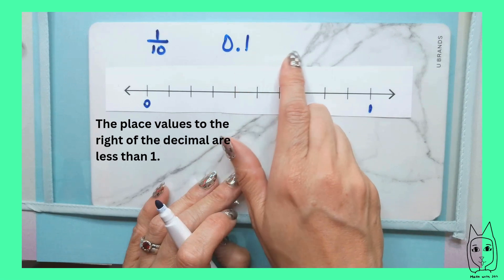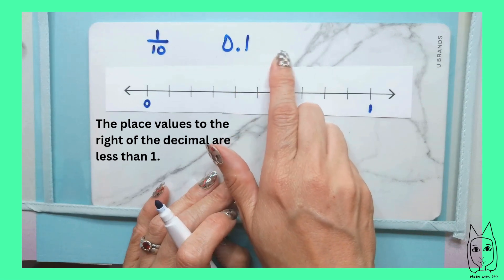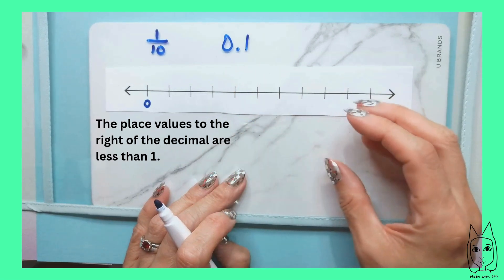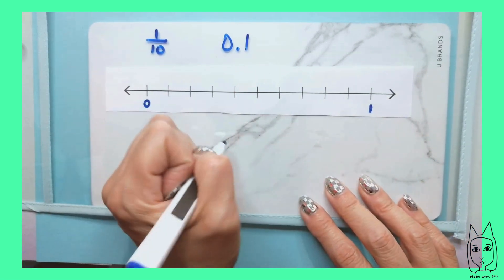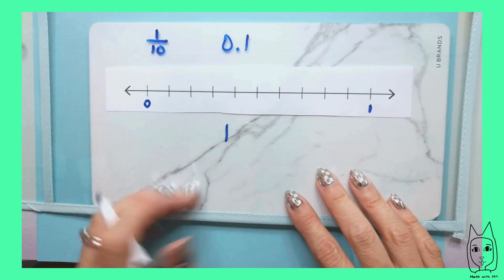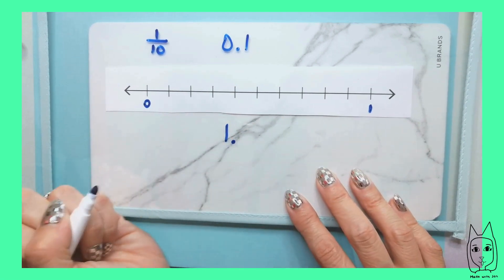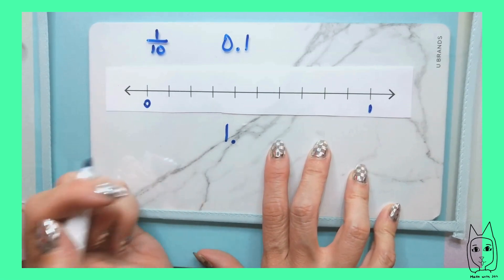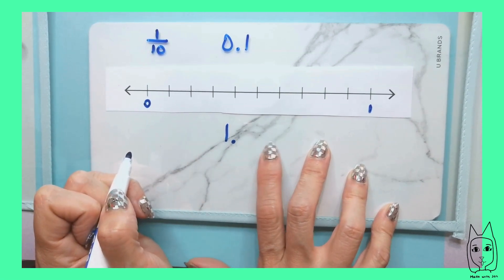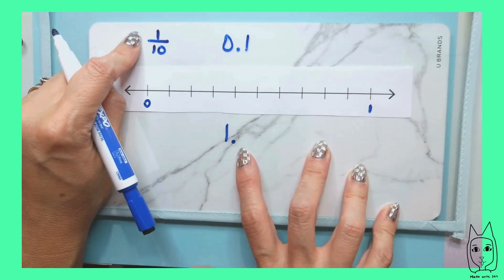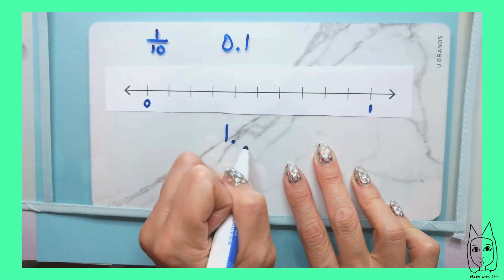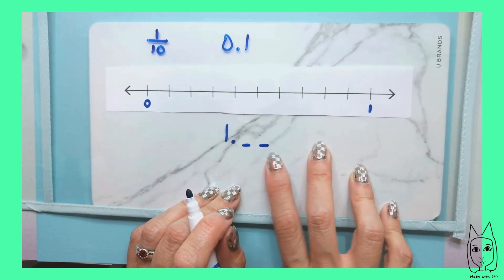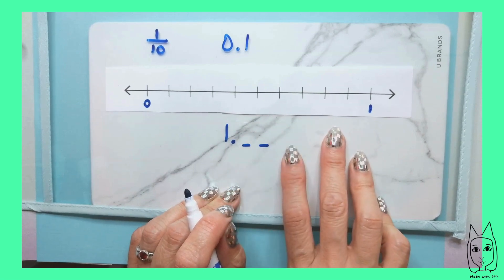In grade four, you're going to start looking at the place values to the right. The place values to the right are values that are less than one. If I had the number one, there is a decimal behind it that we just usually don't write unless there's a part of a whole we want to talk about. We are now going to be going into some place values that are to the right of the decimal, representing part of a whole.